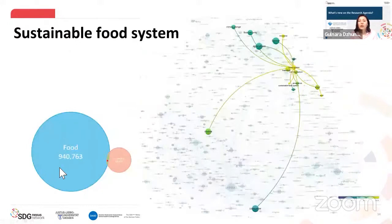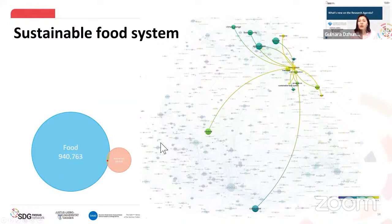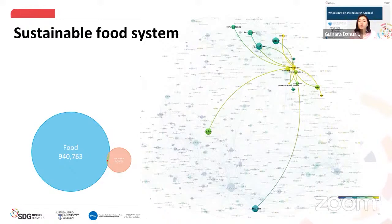Next, we further reviewed the sustainable food system terms. Fifty-six papers with the keyword 'sustainable food system' were revealed from the sample database and used to create a co-occurrence map. The keyword 'sustainable food system' has an average publication year score of 2019. We see that 'sustainable food system' has only one link with 'food system,' while at the same time 'food system' is closely located near the keywords 'transition' and 'transformation.'